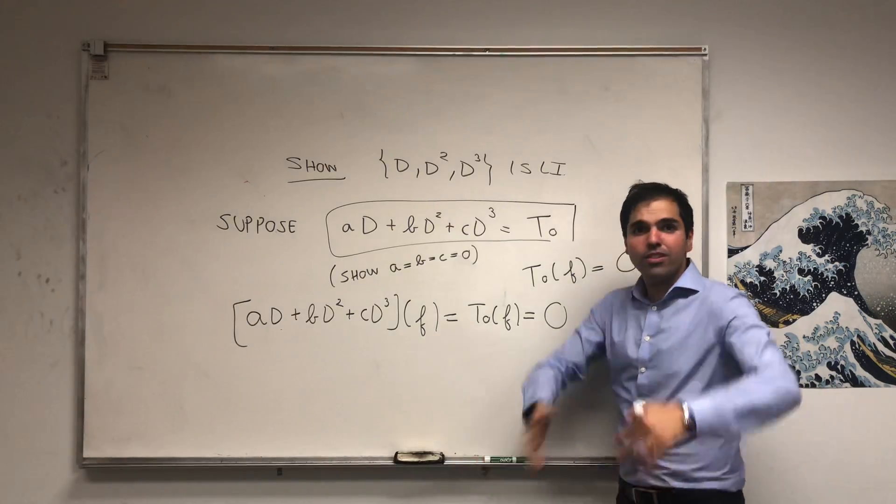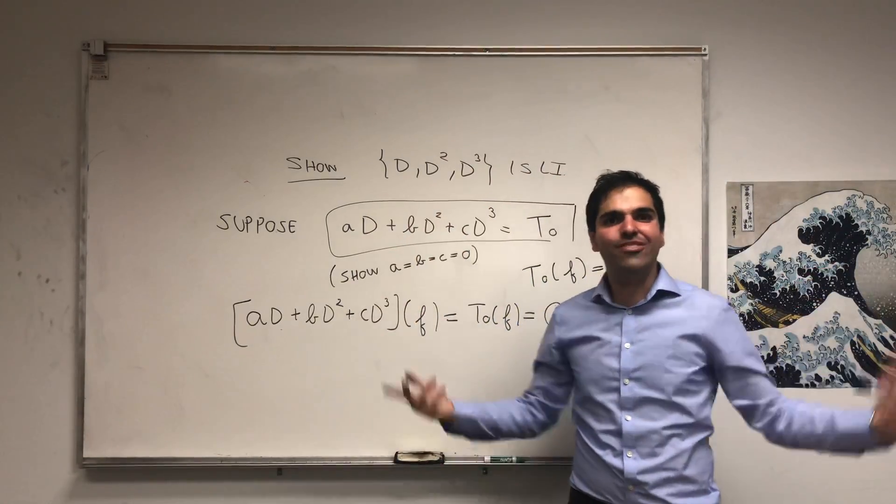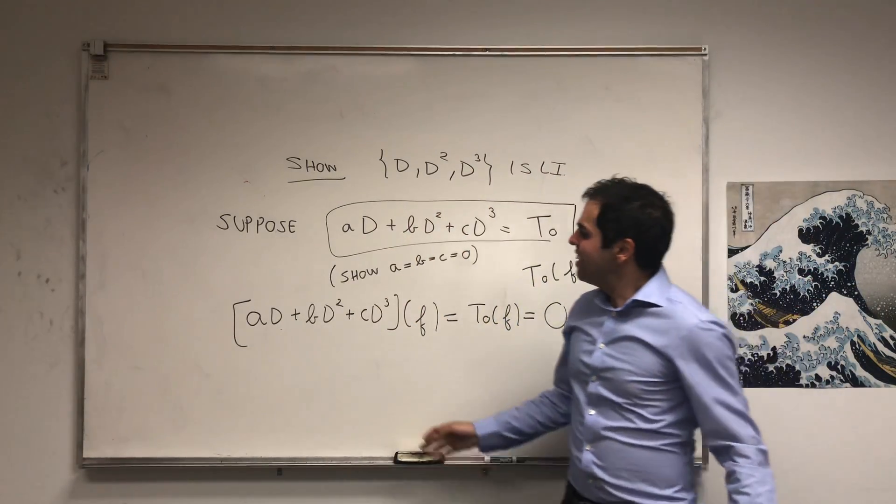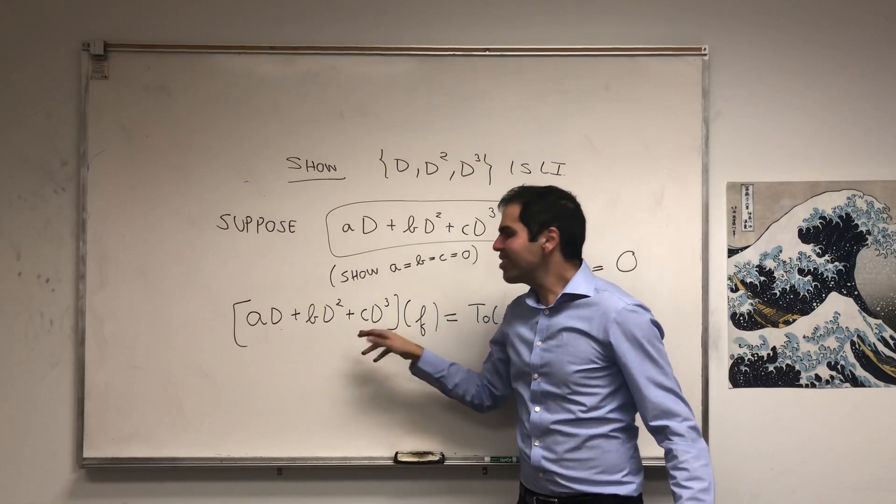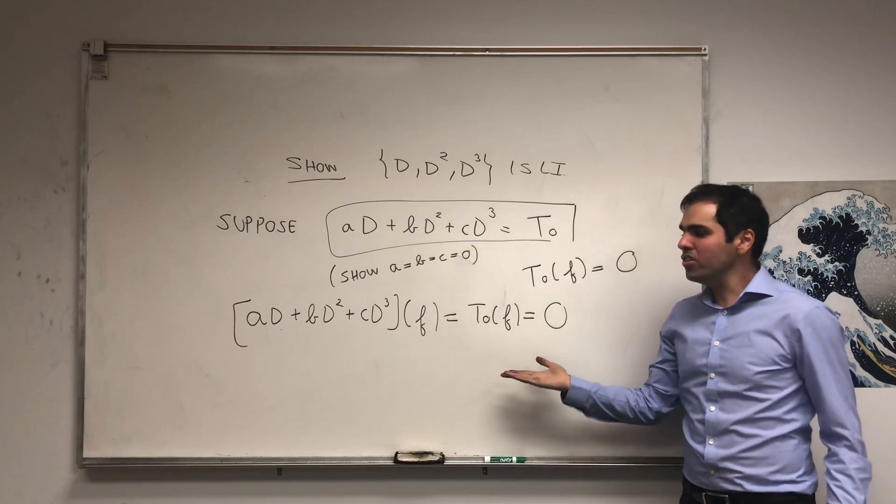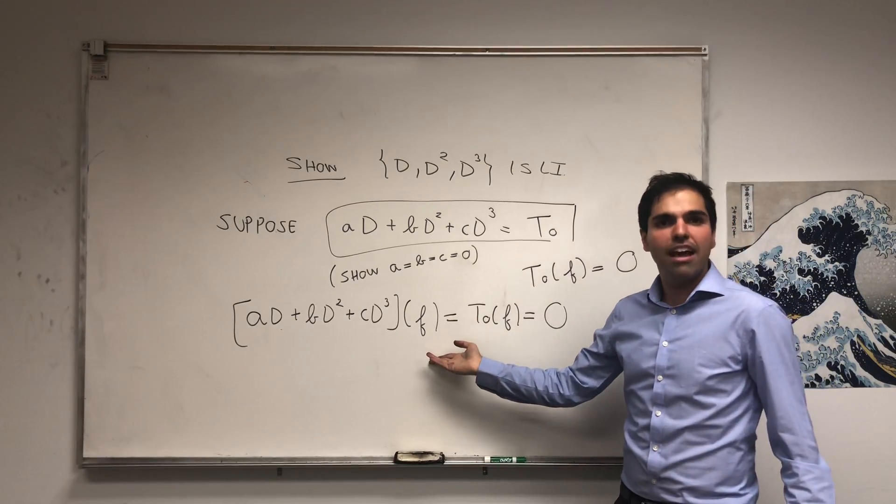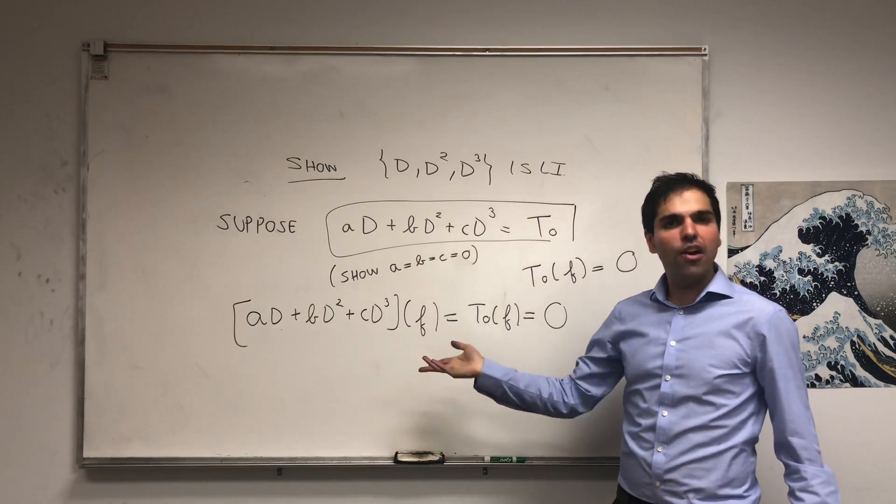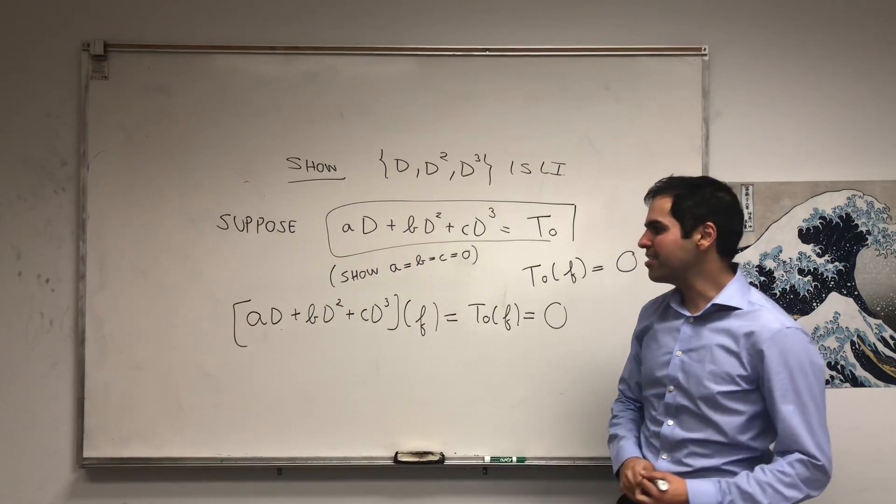And in particular, it works for those infinite functions that we have in hand. But all we need to show is that those three constants are zero. So it turns out all you need to do is pick some clever functions that allow you to conclude that those constants are zero.